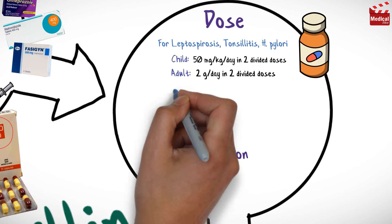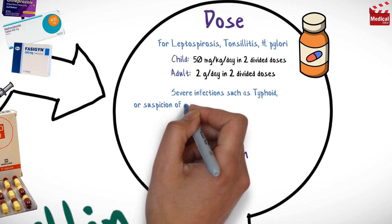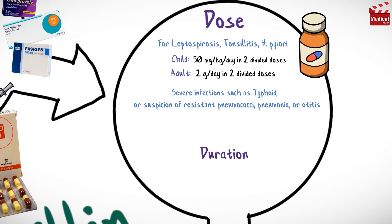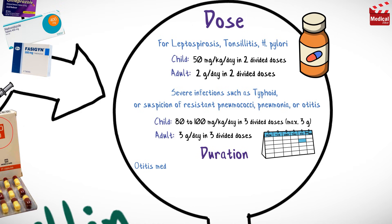In severe infections such as typhoid, or suspicion of resistant pneumococci, pneumonia, or otitis: for children, 80 to 100 mg/kg/day in three divided doses; for adults, the dose is three grams per day in three divided doses.